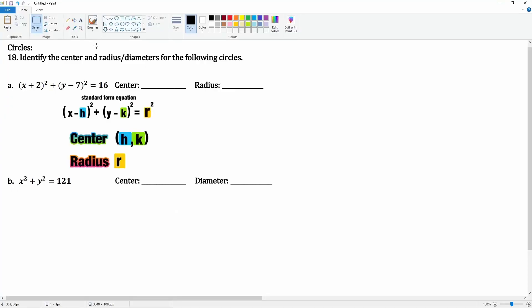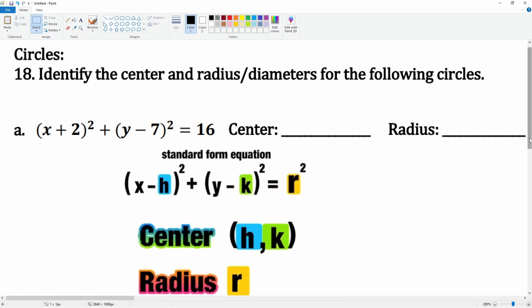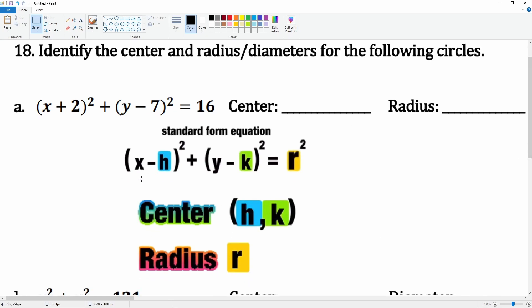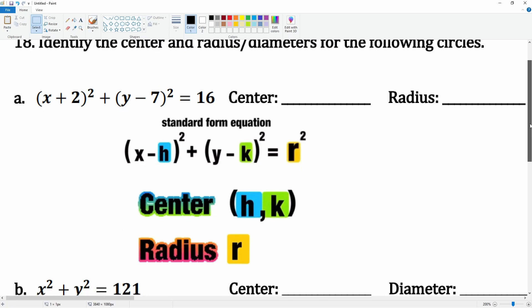Alright, number 18 asks us to identify the center and the radius or diameters of the following circles. Here I give you the standard form of a circle. In standard form, (x - h)² + (y - k)² = r², the center is defined by h and k, and the radius is the r.